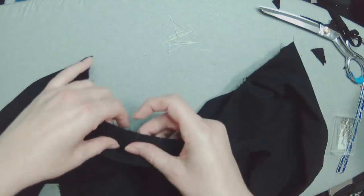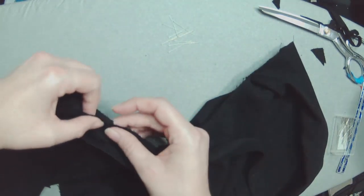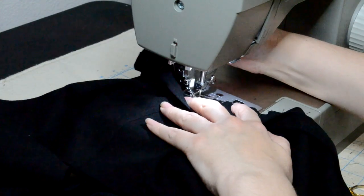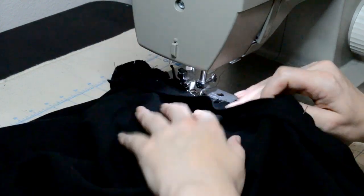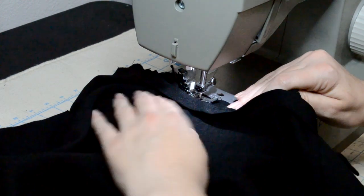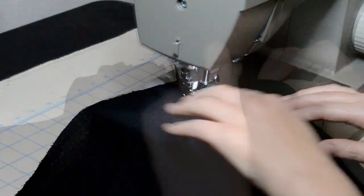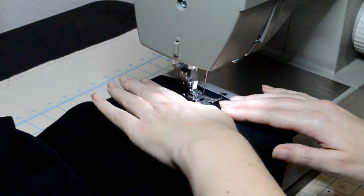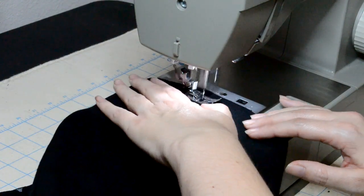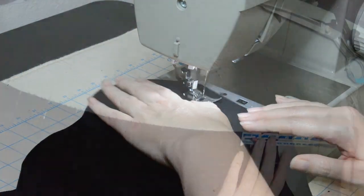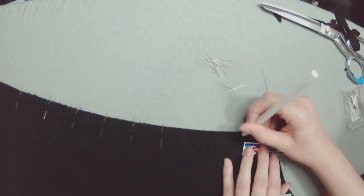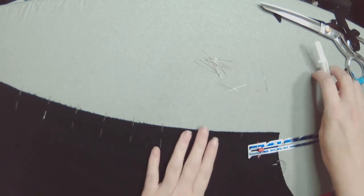The collar band was then pinned to the neckline, stitched down, and felled off camera later. The next step was to put two rows of gathering stitches into the sleeve heads and wrists. Then the sleeve seam was pinned and stitched closed, leaving two inches open at the wrist end.